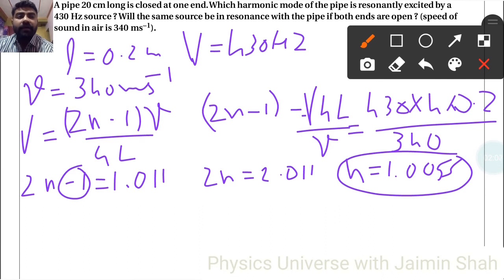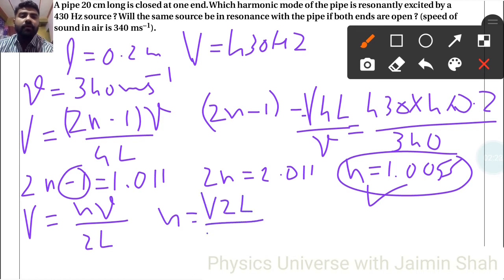Now for open end, the frequency formula is nu equals N times V upon 2L, and we have to find N. So N equals nu times 2L upon V. Now nu is 430 into 2 into length is 0.2 upon V is 340.